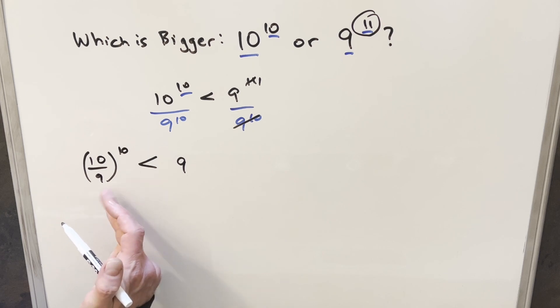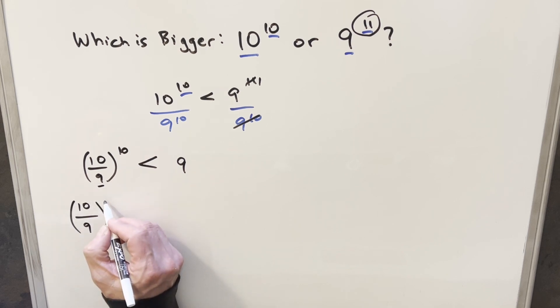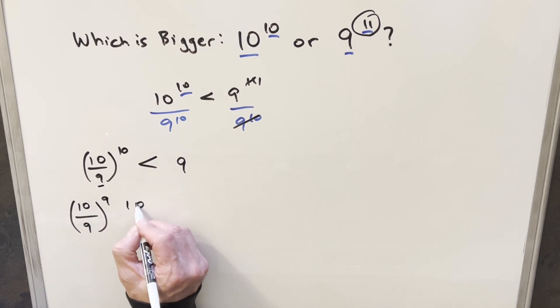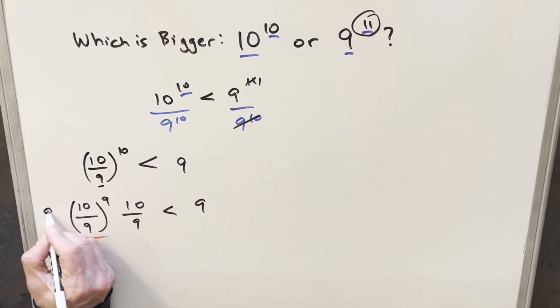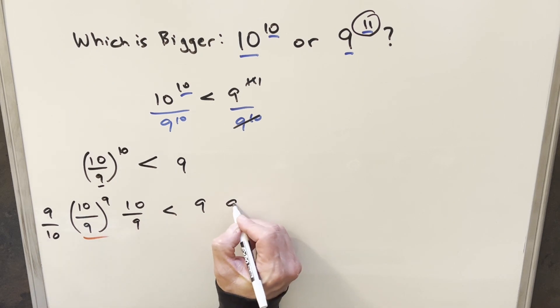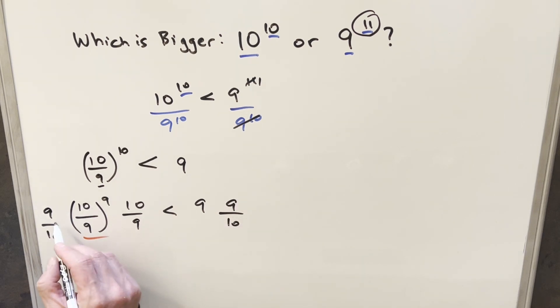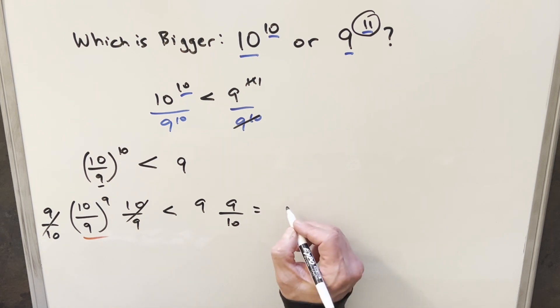On the left side, I want to break this up. I want to get the exponent to match this number, so I'm going to write it as (10/9)^9 times 10/9. Then, to isolate this piece, I can multiply by 9/10 on both sides. This will cancel with this and just be 1, and on the right side this becomes 81/10.